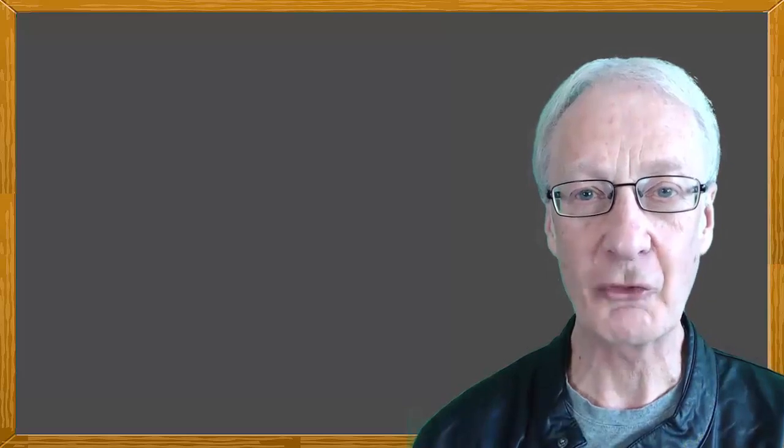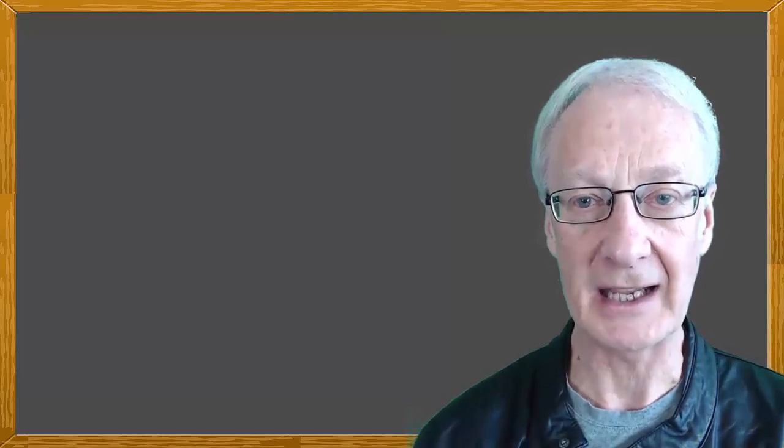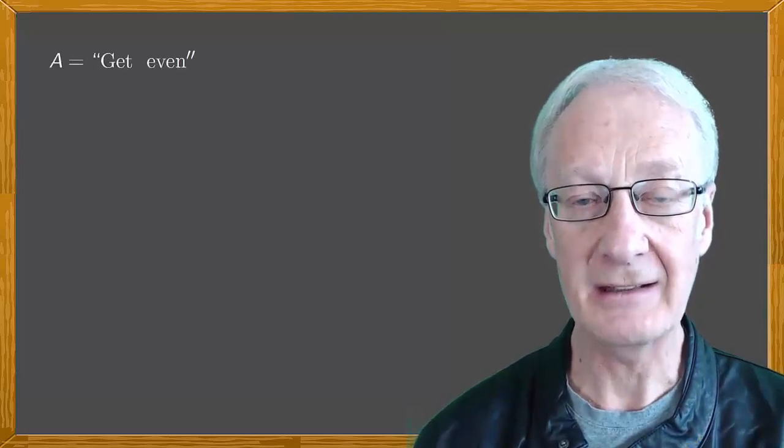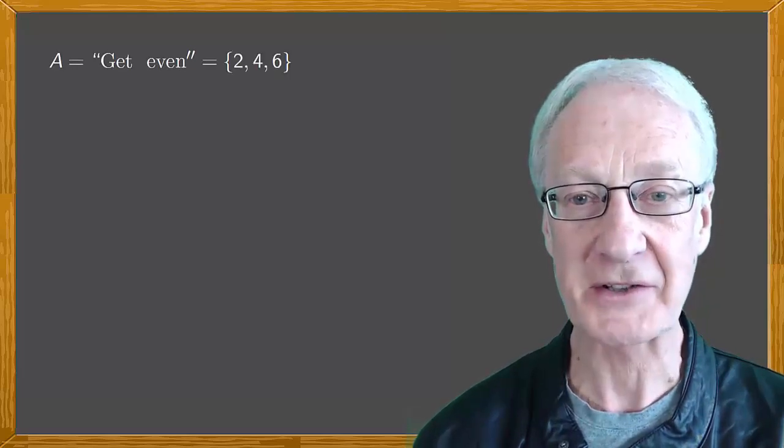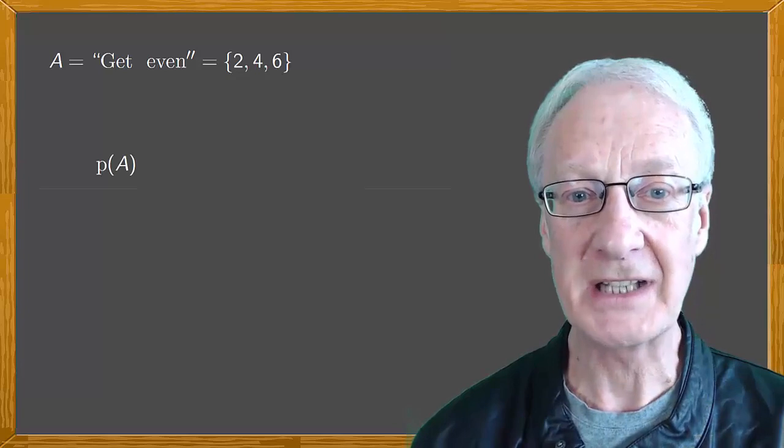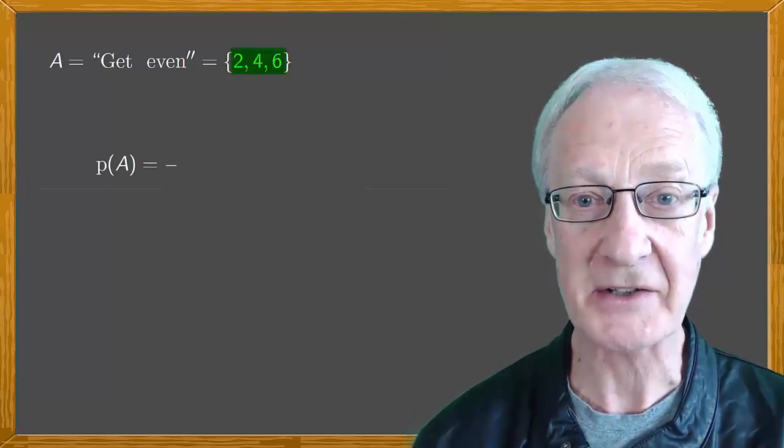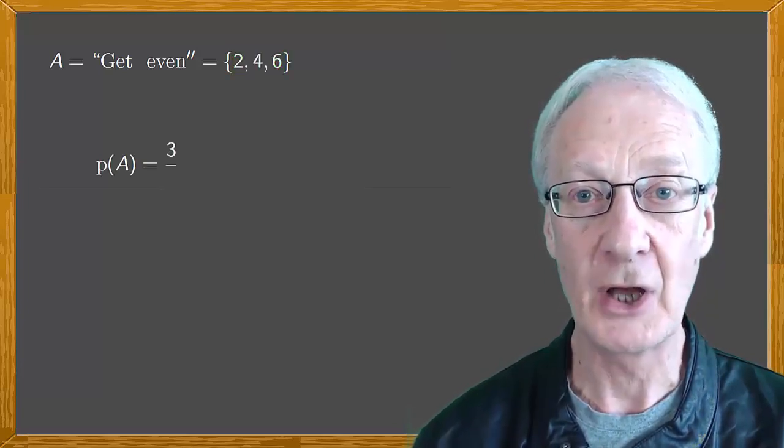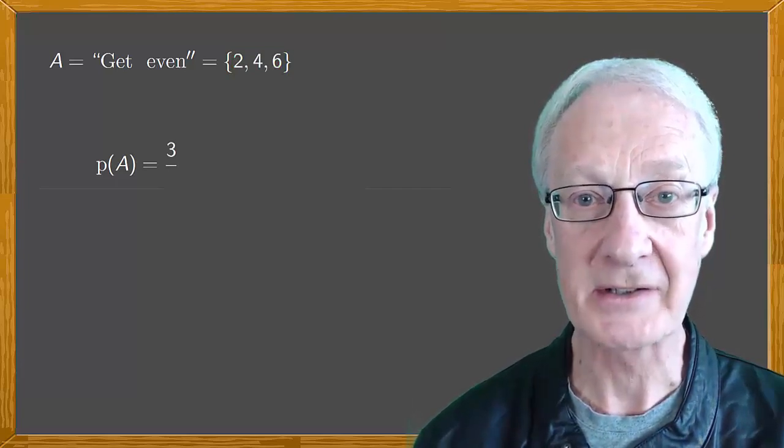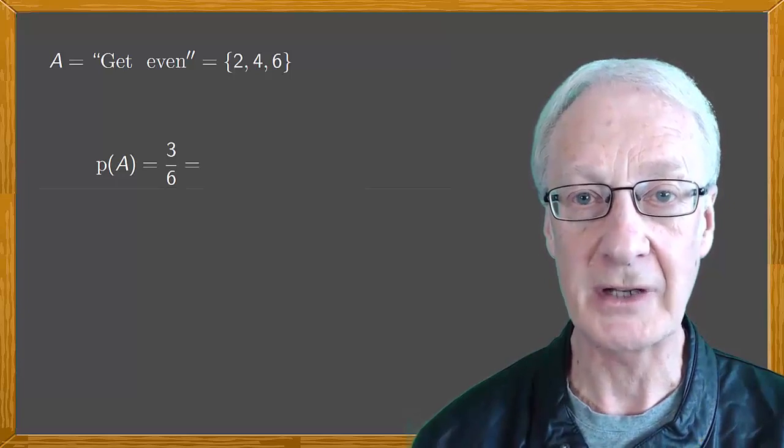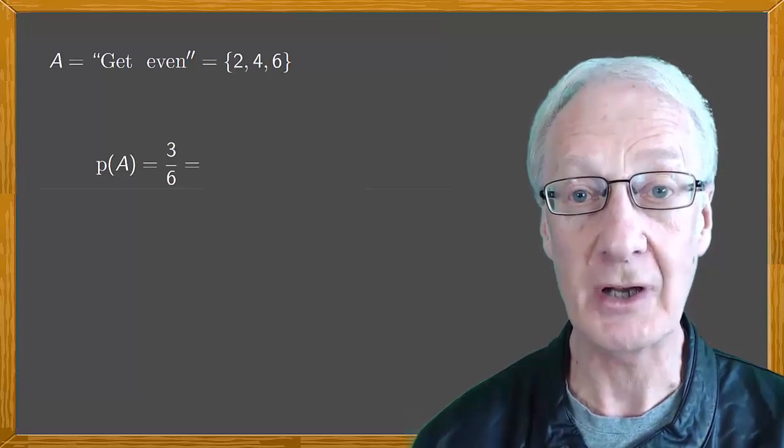Consider the experiment of randomly throwing a die and the event A get even, which is 2, 4, 6. The probability of A is the number of favourable cases, which is 3, over the total number of possible cases, 6, which simplifies to a half.